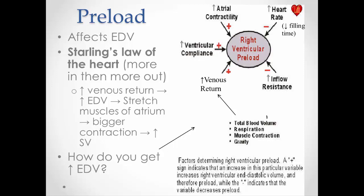First let's look at preload. Preload has to do with stretch of the ventricles. Stretching those ventricles lines up the myosin heads with the actin binding sites better. So I get the maximum number of myosin heads binding to the binding sites on the actin, and therefore I get lots of cross bridges, and therefore a stronger contraction.